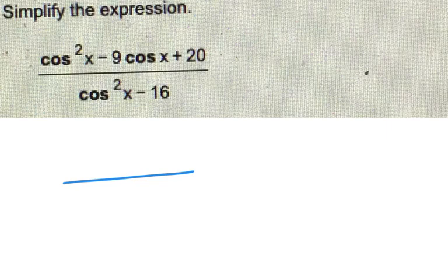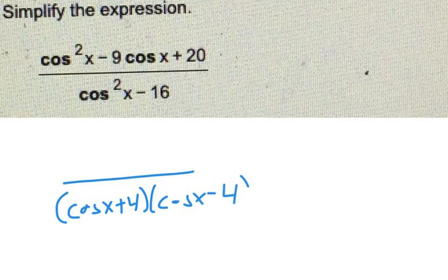So I know the denominator will factor to be cosine of x plus 4 times cosine of x minus 4, just because it factors as a difference of perfect squares.